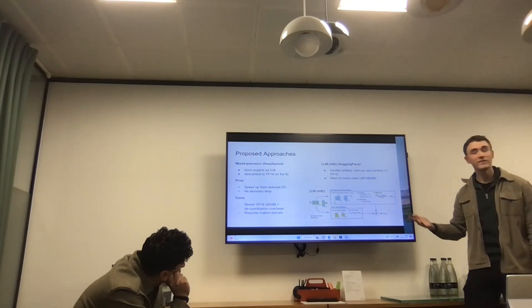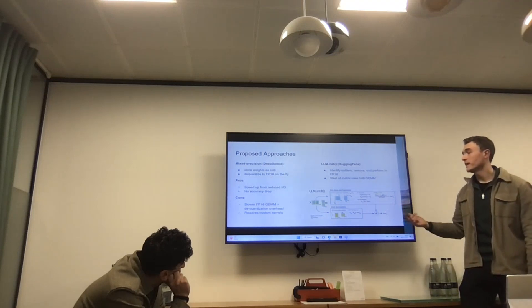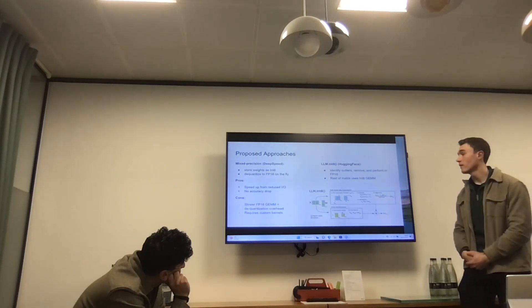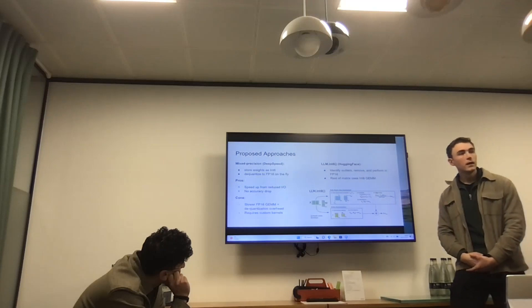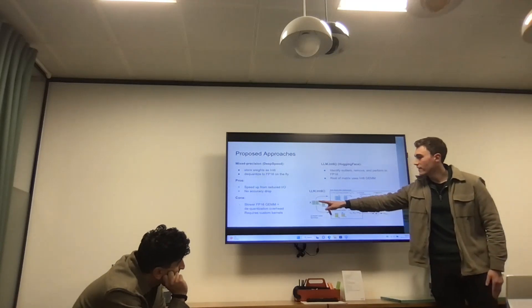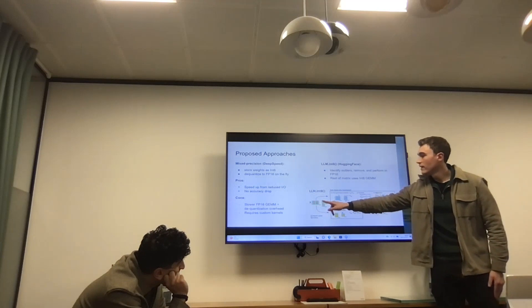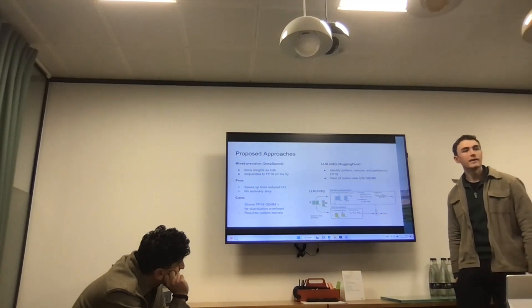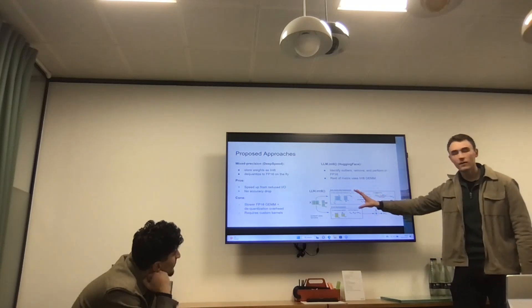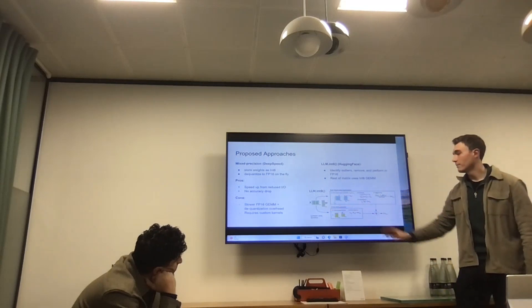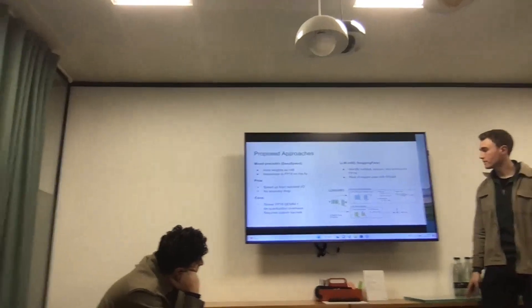LLM.int8 is very direct but not very elegant. It also required a custom kernel, was extremely slow, and only provided speedup at around 50–100 billion parameters. It did make models smaller for cheaper hardware storage. The approach is exact minus the quantization approximations — it separates outlier features and performs the multiplication in two separate operations that are then added together.